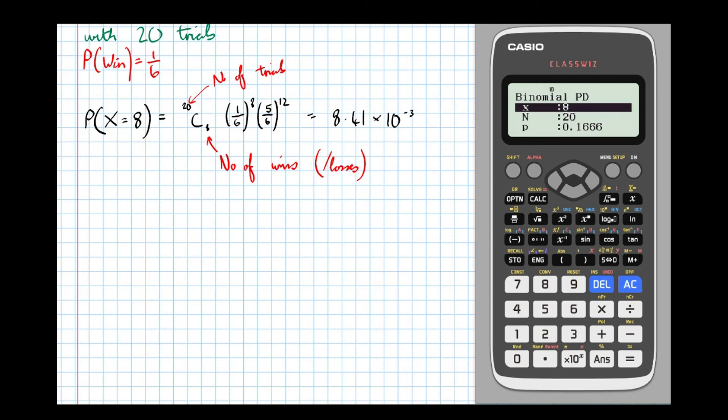Remember, distribution mode, binomial probability distribution, binomial PD, variable, and input all the data. So X is the number of wins, capital N is the number of trials, and P is the probability of winning. And that'll give the same answer as we got before.